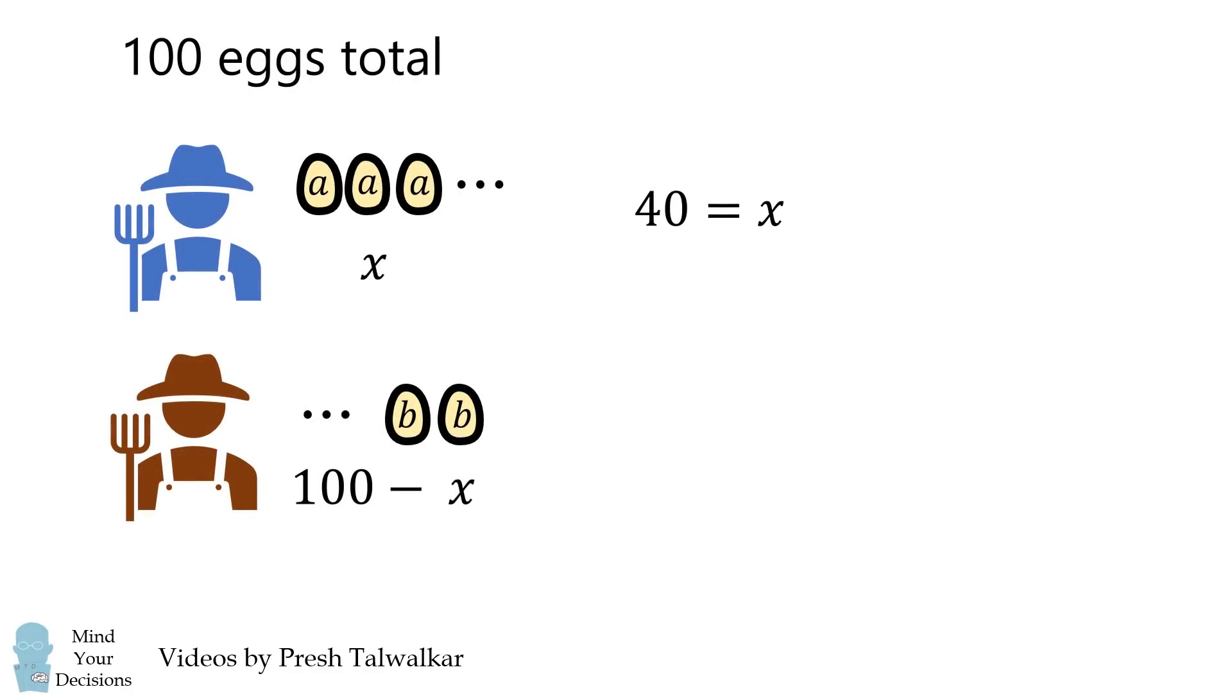And 100 minus x is equal to 60, which is the number of eggs of the second farmer. So the answer is the first farmer had 40 eggs and the second farmer had 60 eggs. What a neat riddle!